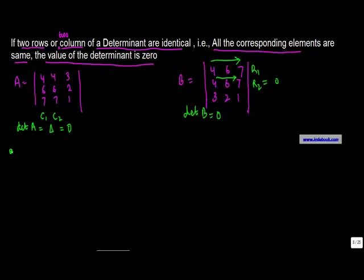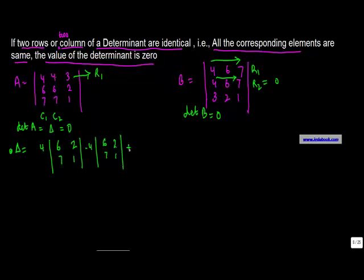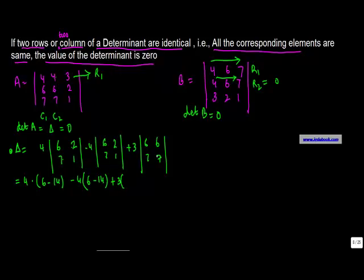Let's calculate Delta for matrix A by expanding along the first row. For the first element 4, we get (6×1 − 7×2). For the second element 6, we get (6×1 − 7×2) again. For the third element 3, we get (6×7 − 6×7). So: 4×(6−14) − 6×(6−14) + 3×(42−42).